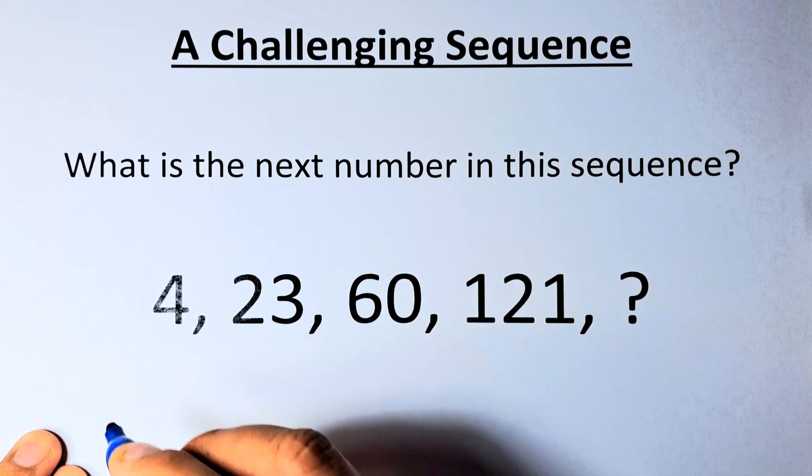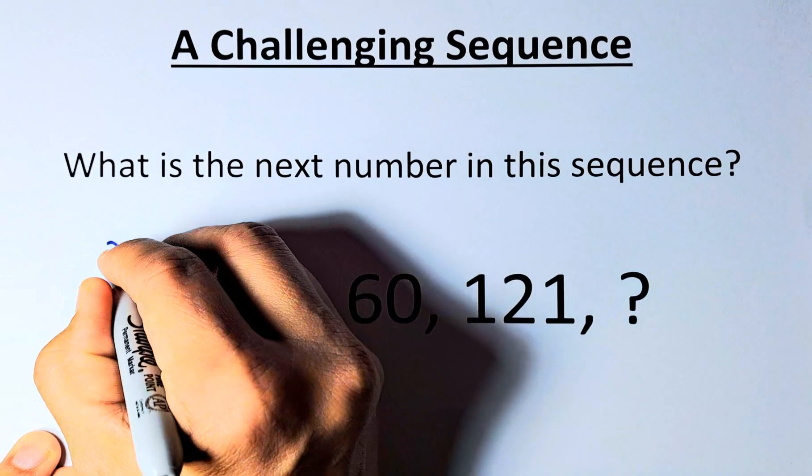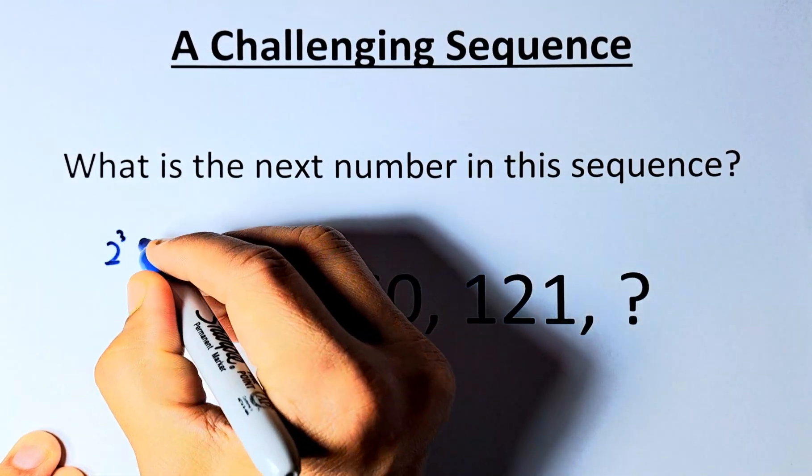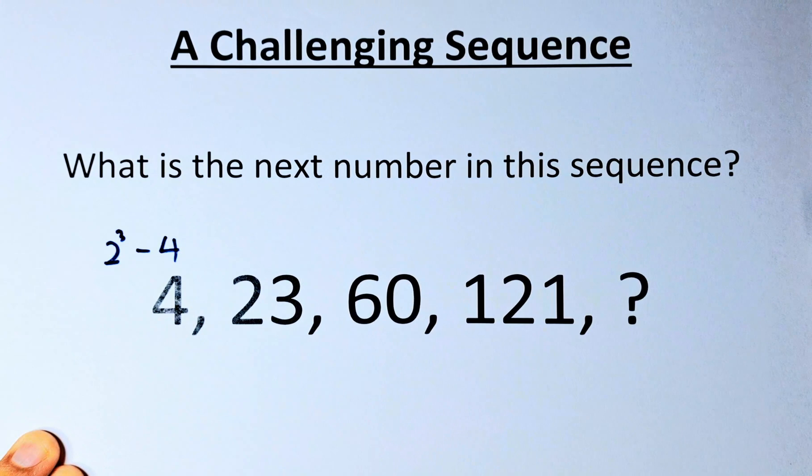4 is actually made up of 2 cubed. I'm going to write here, 2 cubed minus 4. 2 cubed is 8, 8 minus 4 is going to be 4.